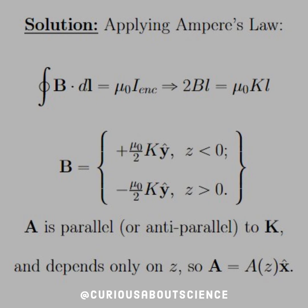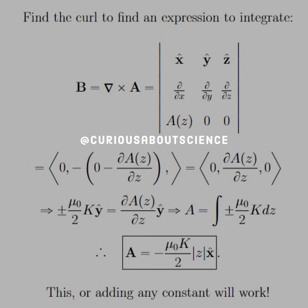Since we know that generally A is parallel or anti-parallel to k and depends only on z, A is a function of z in the x-hat direction. Just like we did in the last question, if we find a curl, we can find a differential equation to solve, since we already know the magnetic field. It's kind of backwards, like how we use the electric field to find the electric potential, but the more tools we have, the better off we'll be.